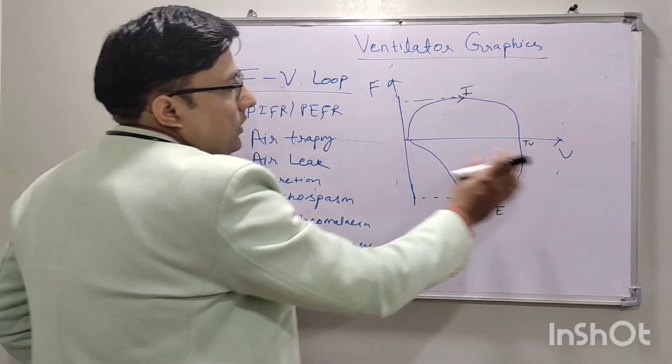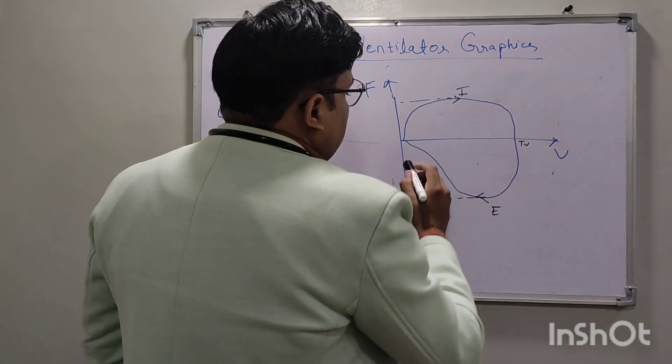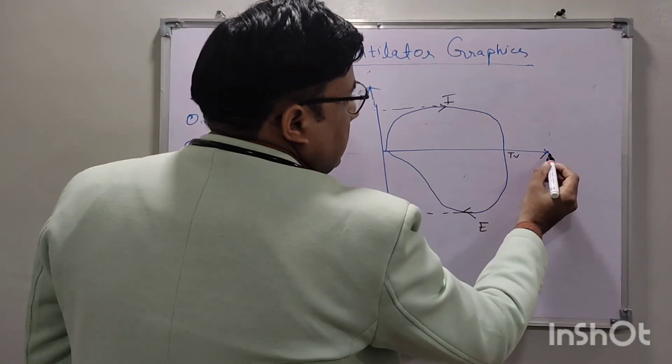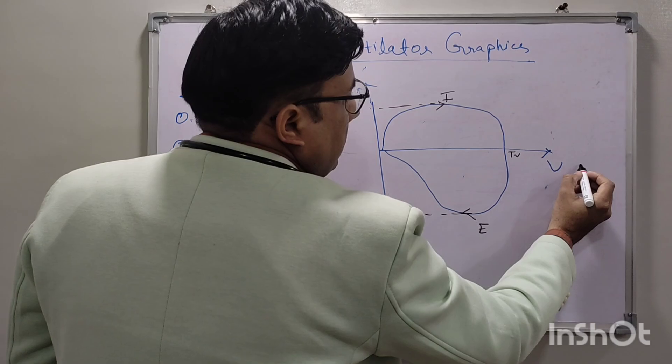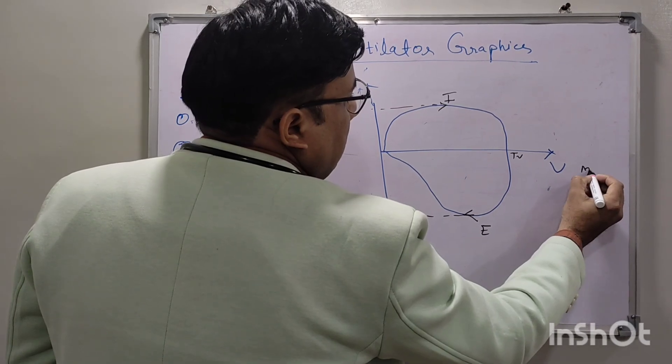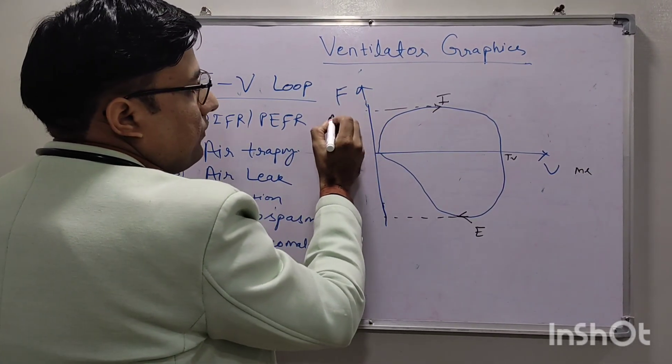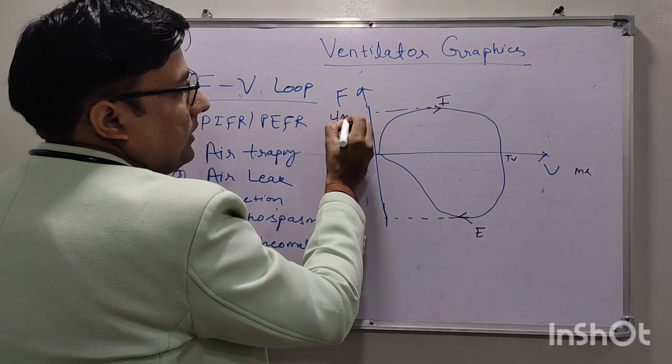This is the flow volume loop. On the x-axis is the volume in ml, and on the y-axis is the flow in liters per minute.